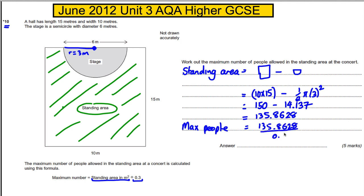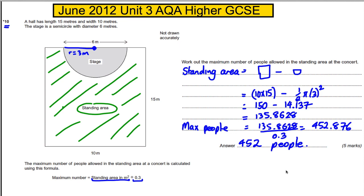Tapping that into the calculator gives 452.876. You can't have 0.8 of a person, so the maximum is 452 people. State the units — we're talking about people. Very simple — that's five marks.